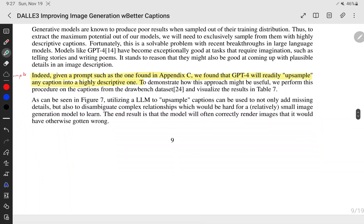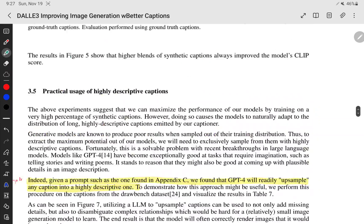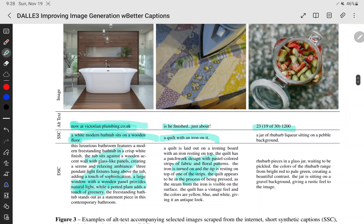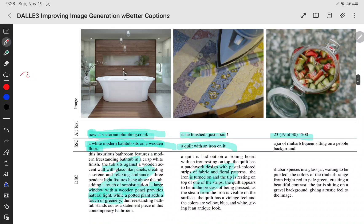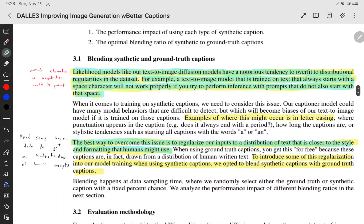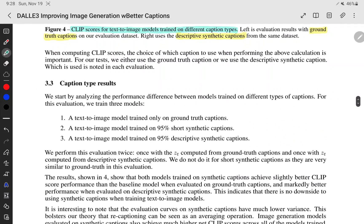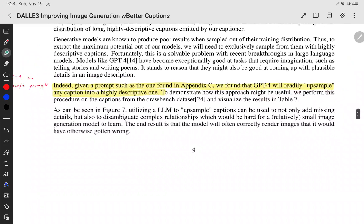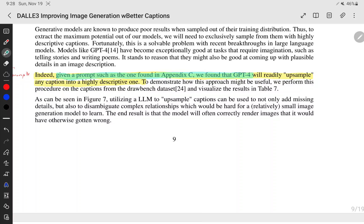Continuing on, there's one last thing, and that is how they upscale. These really descriptive descriptions are really good. But if I were generating an image, let's say I wanted this image here on the left, I would probably give it something like white bathtub and then wood floor and so on. Like, it would be even worse than that, probably. So, humans aren't good at prompting. We're not that good at working with images. What they mention is that given a prompt, such as the one found in the appendix, so some bad prompt, GPT-4 will upsample any caption into a highly descriptive one. So, they use GPT-4 to upsample it.